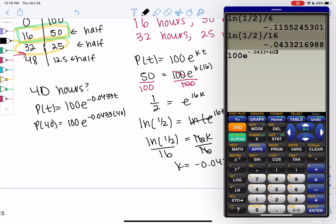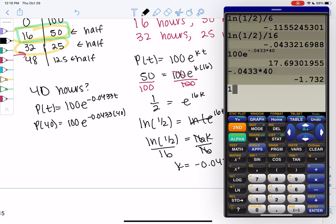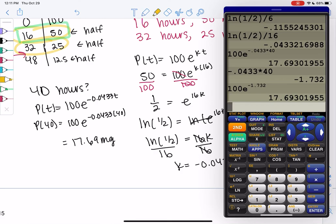So 100 times e to the negative 0.0433 times 40. Make sure the negative 0.0433 and the 40 are both in the power. If you don't have the ability to do that, then go ahead and multiply them first. And then do 100 times e. And then when we did negative 0.0433 times 40, we got negative 1.732. But if I'm able to type everything at once, I find that a little bit easier. So we get 17.69 milligrams. And that makes sense with the table because it's in between 25 and 12.5. And that's half-life. So if you set up the table and just cut it in half every half-life, it's not too bad.